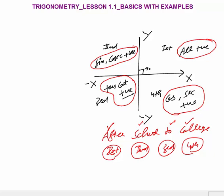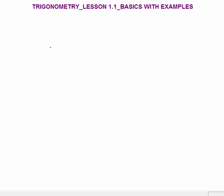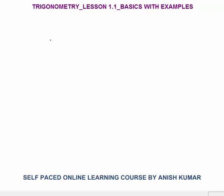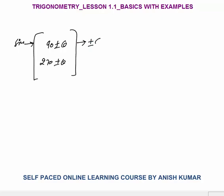Now I will explain how to calculate sine, cos, and tan for bigger angles. For 90 plus or minus theta, or 270 plus or minus theta: sine of 90 plus or minus theta, or 270 plus or minus theta, will give you plus or minus cos theta. The plus or minus sign is decided based on the quadrant the angle lies in.